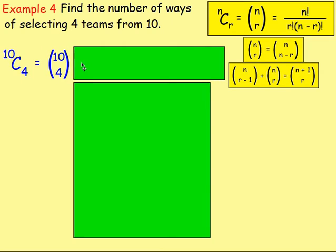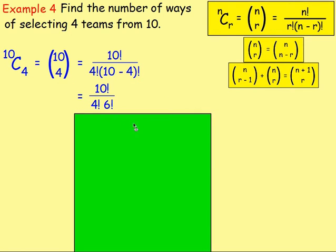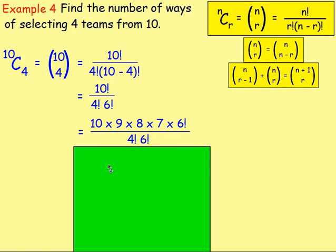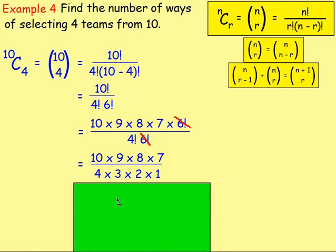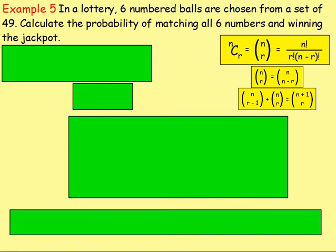Example four: find the number of ways of selecting four teams from a group of ten. We have ten teams and want to choose four, so using the formula: ten factorial over four factorial times (ten minus four) factorial. Ten minus four is six, so it becomes ten factorial over four factorial times six factorial. Writing ten factorial in terms of six factorial allows cancellation, leaving ten times nine times eight times seven on top and four factorial (four times three times two times one) on the bottom: 5040 divided by 24 equals 210.